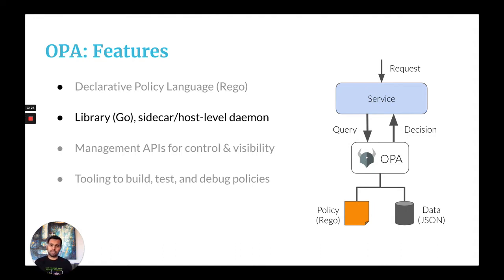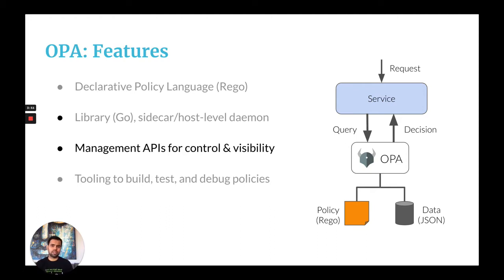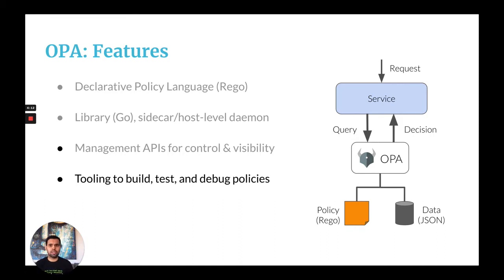OPA does not have any runtime dependencies, which means it does not have to talk to any external services for making a policy decision. You can, however, extend OPA to do that, but that's completely optional. OPA does provide management APIs that allow OPA to pull policy and data from a remote service, or upload its decision logs and status to an external service. Along with the core policy engine, OPA provides a rich set of tooling for unit testing, benchmarking, and profiling your policies, with integrations for VS Code, IntelliJ, and an online Rego playground to experiment and share policies.